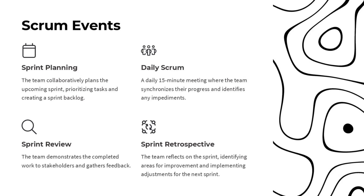The Scrum framework consists of several key events that help the team stay aligned and continuously improve. First, sprint planning is where the team collaboratively plans the upcoming sprint, prioritizing tasks and creating a sprint backlog. Next, the daily Scrum is a short 15-minute meeting where the team synchronizes their progress and identifies any impediments or blockers. The sprint review is an opportunity for the team to demonstrate completed work to stakeholders and gather feedback. Finally, the sprint retrospective is where the team reflects on the sprint, identifies areas for improvement, and implements adjustments. Each of these events plays a crucial role in keeping the team focused, transparent, and continuously improving.